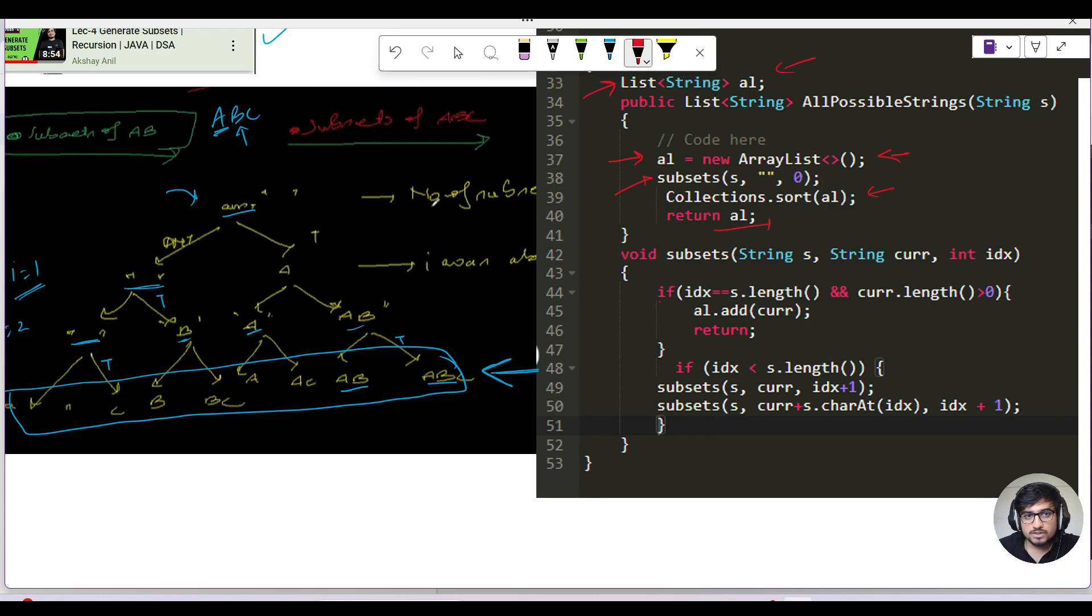The question says return in sorted order, so we just call Collections.sort on the ArrayList and return it. Let's see how the subsets function is written. What are the base cases? I can clearly see that all my answers are coming at the last level. The last level is the string length. For ABC, the last level was 3. So if my idx equals equals to string.length, that means we are at a position where we're getting some particular answers.